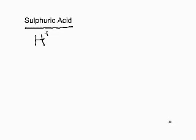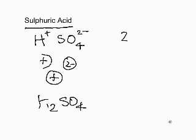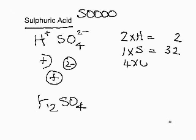Sulfuric acid, H₂SO₄: the alternative name is hydrogen sulfate. It has H⁺ and SO₄²⁻ ions. The formula is H₂SO₄. For the RMM: two hydrogens contribute 2; one sulfur contributes 32; four oxygens each at 16 contribute 64. Total relative molecular mass of sulfuric acid: 98.